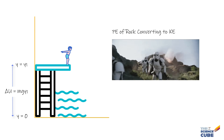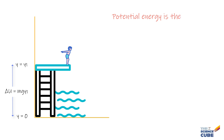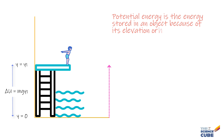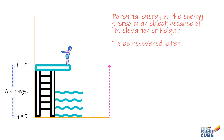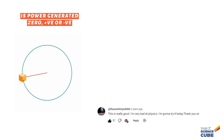Another example is a rock on top of a hill that has the potential to roll down and gather kinetic energy, possibly causing destruction. In simple terms, potential energy is the energy stored in an object because of its elevation or height, to be recovered later. This kind of energy is a measure of the potential — or the possibility — for work that can be done.